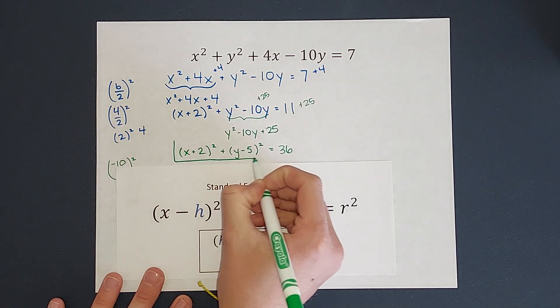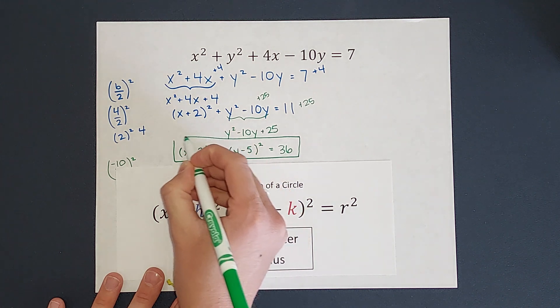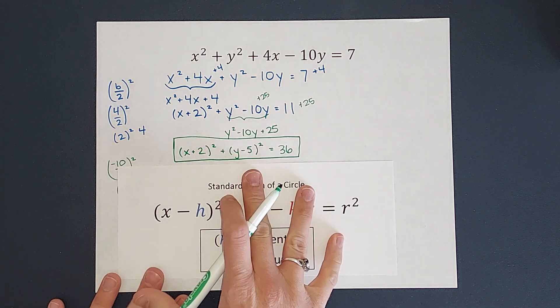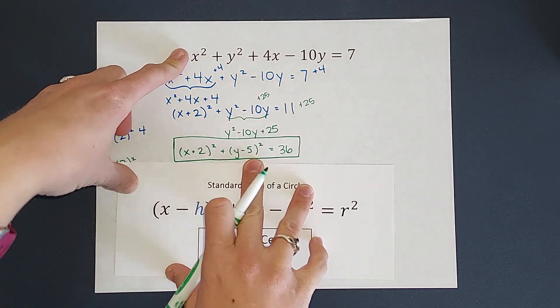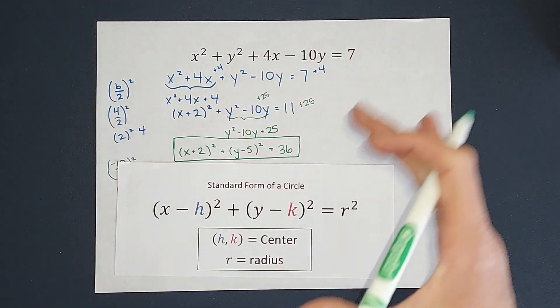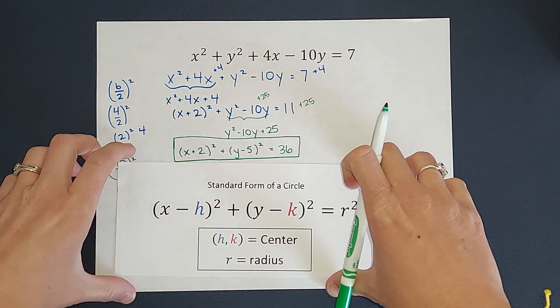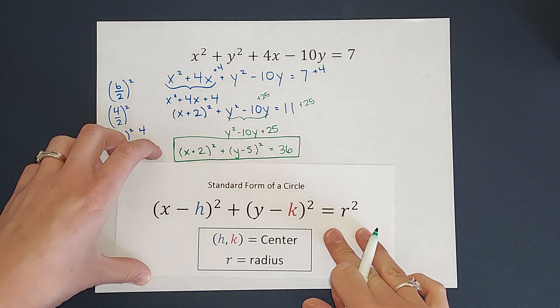Okay, so here is that equation in standard form. It's the same equation. We moved things around. We added to both sides a little bit, but it's the same equation, but now we can easily graph it, right?